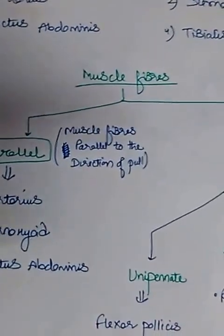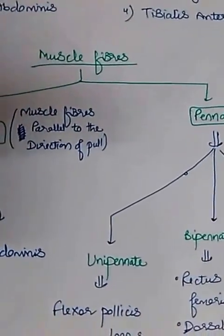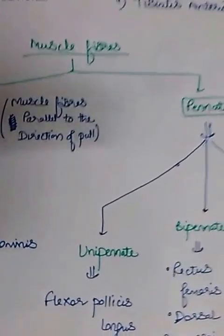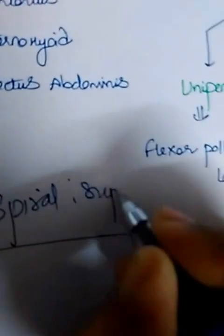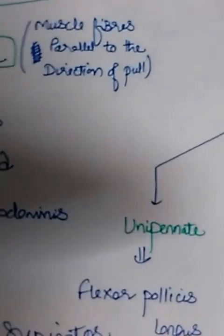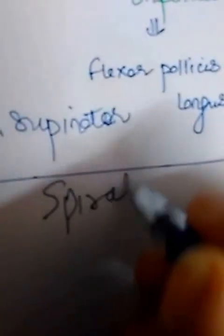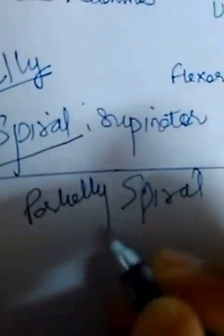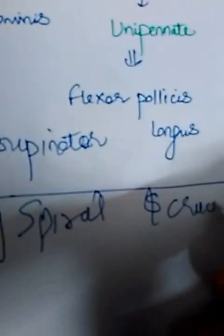The other two types are spiral and cruciate muscles. An example of a spiral muscle fiber is the supinator — the supinator muscle winds around the radius. Some muscles are fully spiral, like the supinator, while some muscle fibers are only partially spiral.